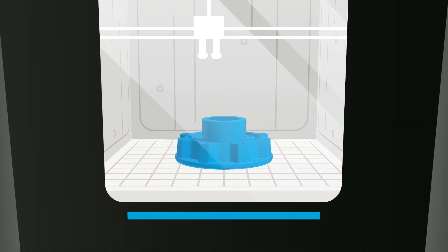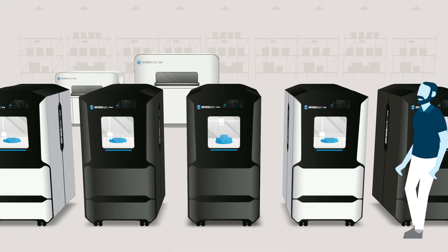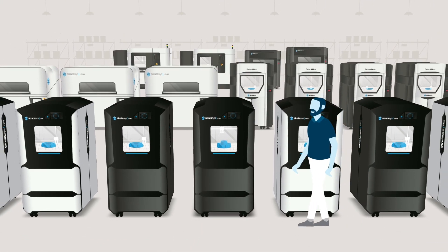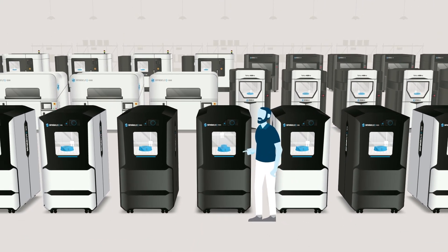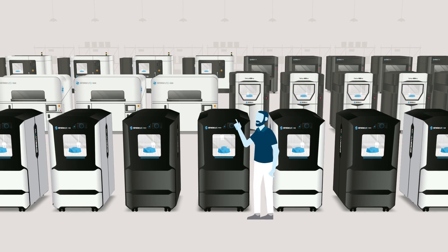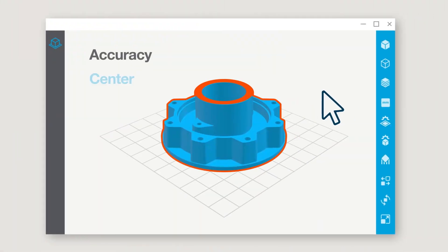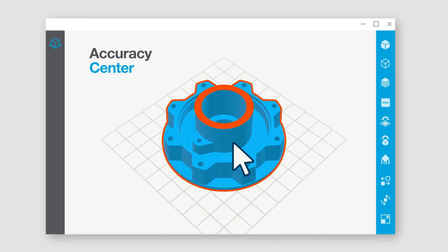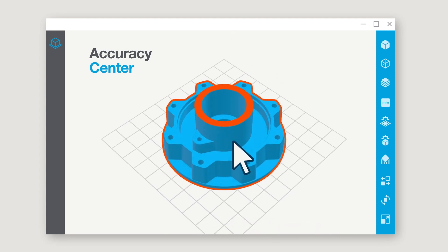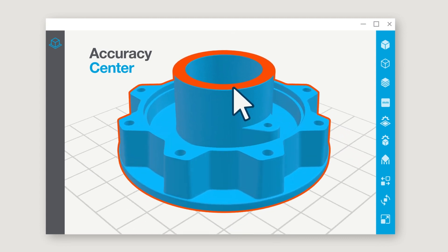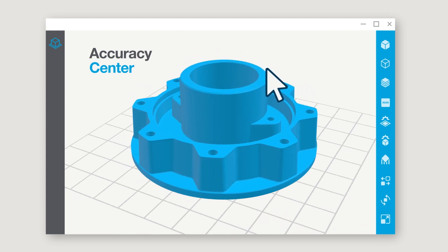Now, GrabCAD Print Pro takes volume manufacturing to the next level, with features that deliver better parts faster when you're printing at scale. The Accuracy Center increases printing precision with 3D scanned data, that lets you diagnose and instantly correct warp, offsets and other systemic inaccuracies.